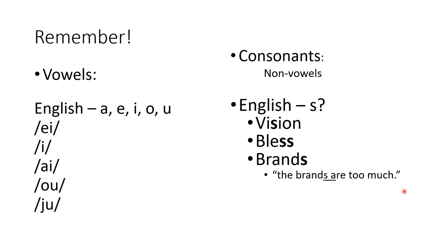Here we've got 'brands.' In the sentence 'the brands are too much,' we can hear that this final S is actually pronounced as a Z sound. It depends on the consonant that comes before it — 'brand' ends in a voiced D, so that voicing spreads to this sound and makes it also voiced: 'brands.' You can compare with the word 'cats': 'the cats are too much.' There the S is voiceless because T is voiceless. This gets into linguistics, but keep it in mind as we start to learn Navajo.